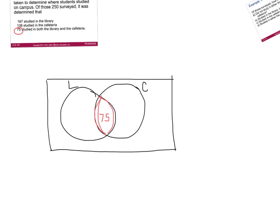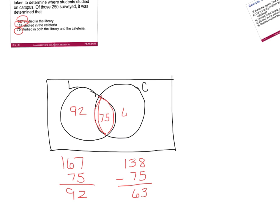Once you have that placed, you can work your way out. We know that 167 students studied in the library total, and that includes the 75 already in the center. So we need to subtract: 167 minus 75 gives 92 students that are in the library only. Then we look at the cafeteria — 138 students study there, which again includes the 75 already accounted for in the middle. Subtracting gives us 63 students in the cafeteria only.